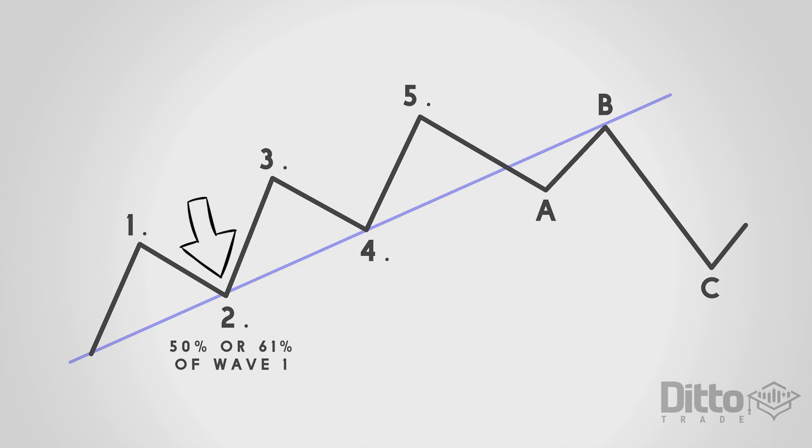volume is generally lower than seen in wave one. If we were to measure the retracement, it's very common that it doesn't go beyond the 61.8% level when using a Fibonacci retracement tool.